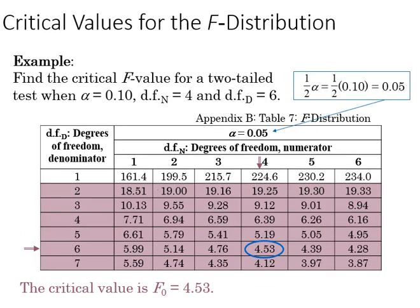For a two-tailed test, recall we look up one-half alpha, so it's one-half of 0.10 at the alpha 0.10 level with degrees of freedom four in the numerator and degrees of freedom six in the denominator. Based on that, we can identify 4.53 as a critical value.